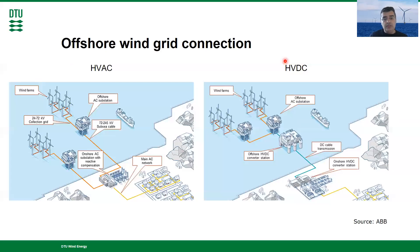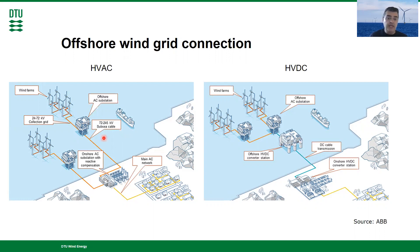When we talk about grid connection of offshore wind, we refer both to the electrical infrastructure — cables, substations, offshore transformers, compensators, converters, and so on — used to collect and transport the power to the onshore grid, but we also refer to the grid code requirements and control solutions for fulfilling them, both for HVAC and HVDC transmission.